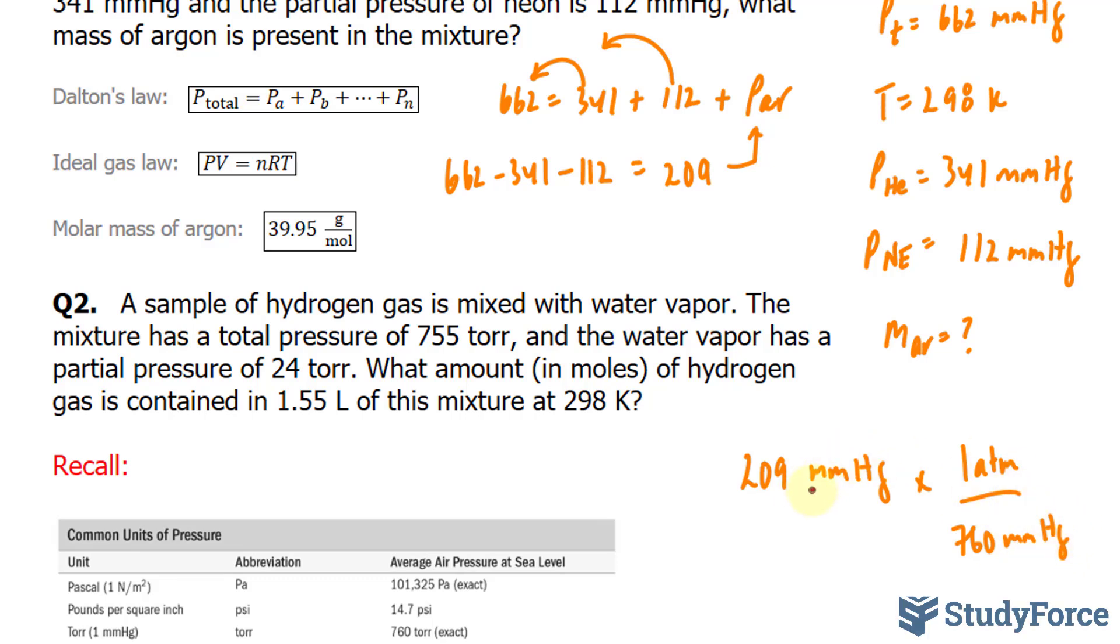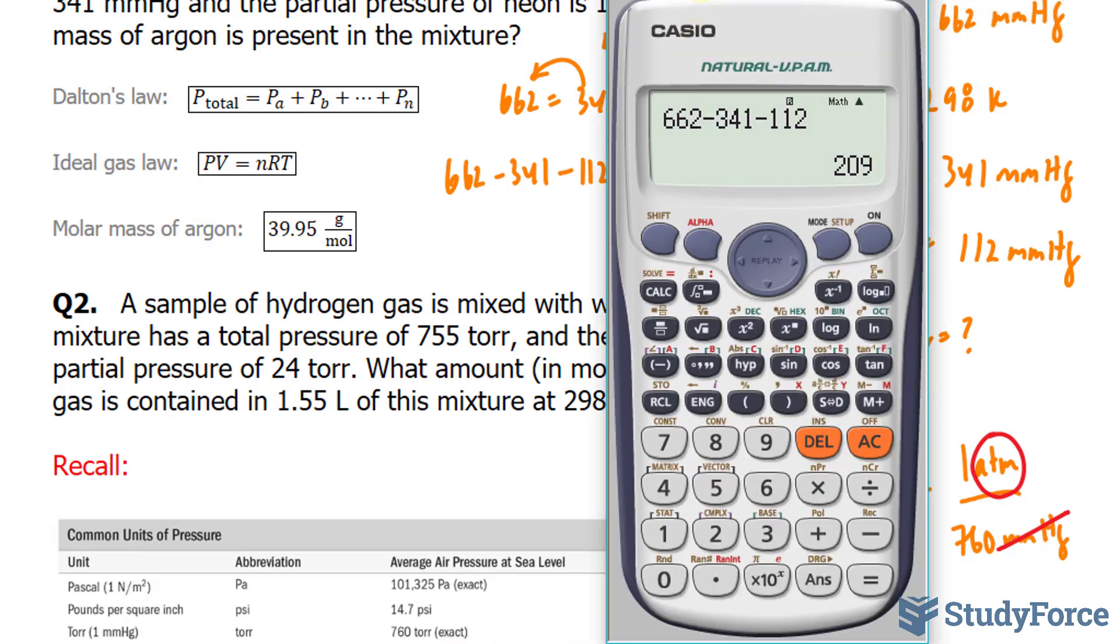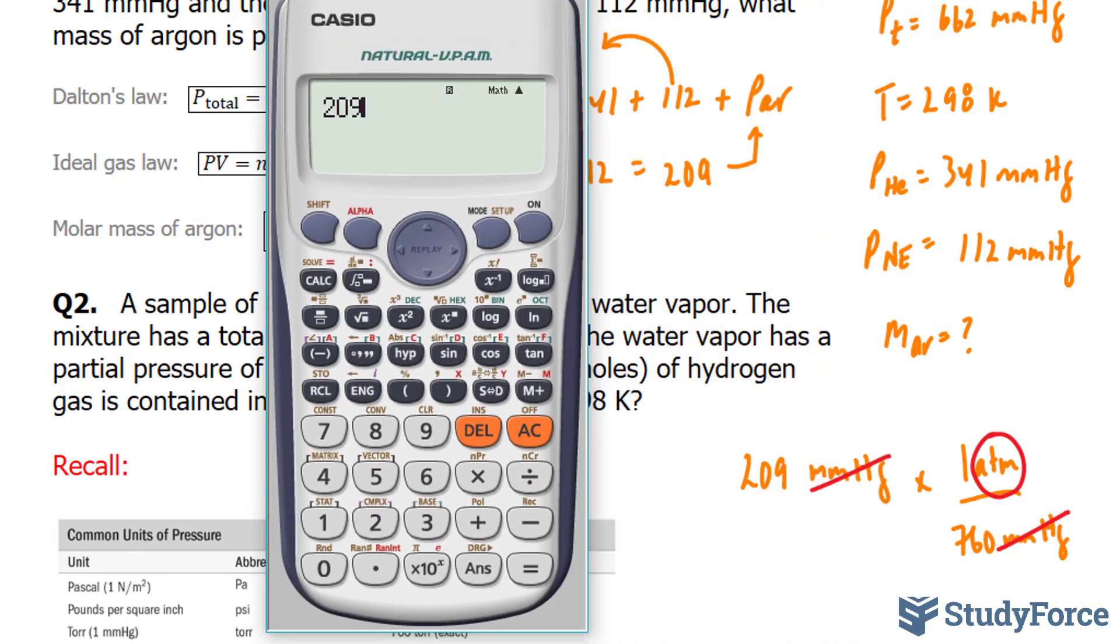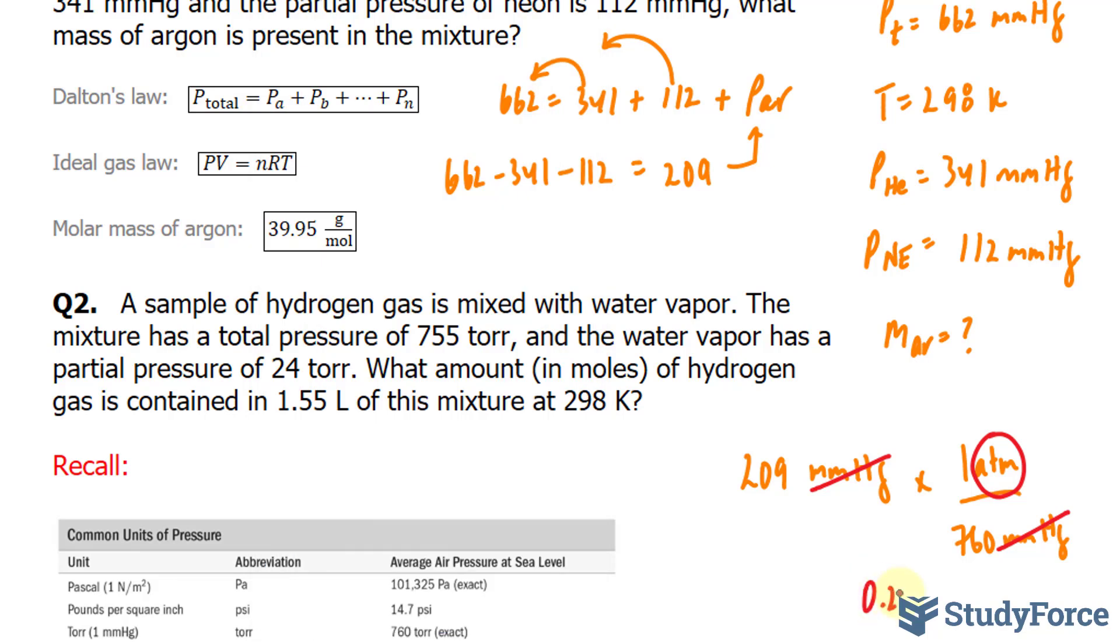By multiplying it this way, this unit and this unit go away, and we're left with our atmosphere unit. What I end up with is what I have to place into P. Let's go ahead and calculate that. We have 209 divided by 760 gives us exactly 0.275. 0.275 atmosphere.